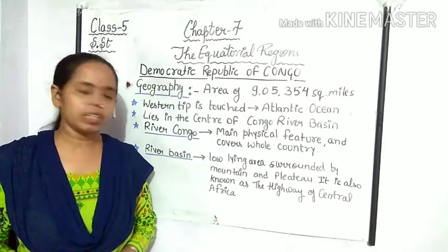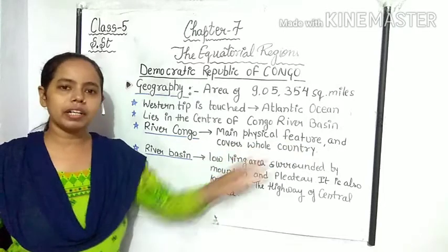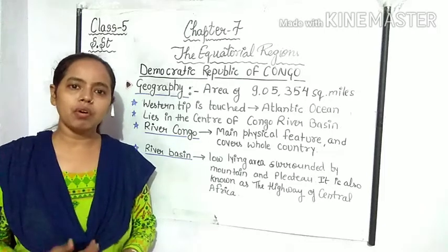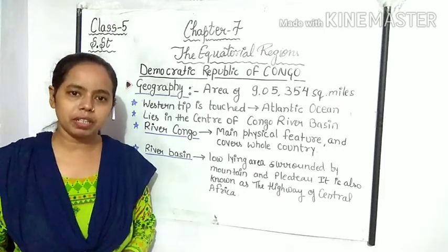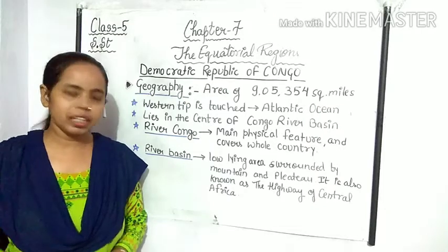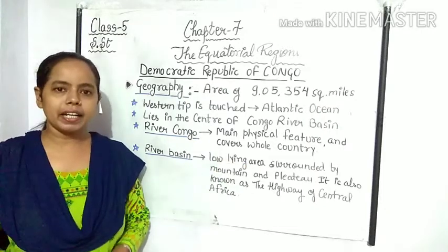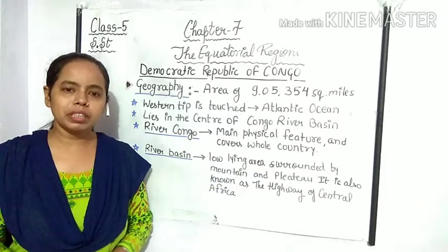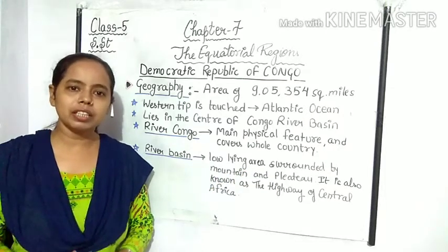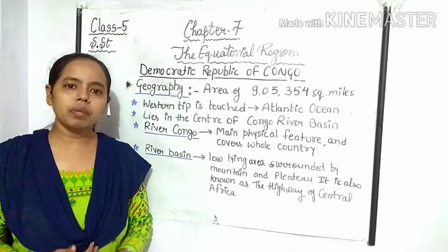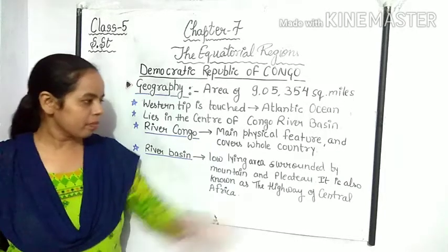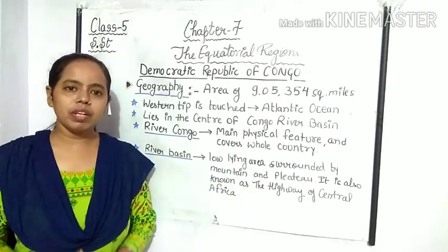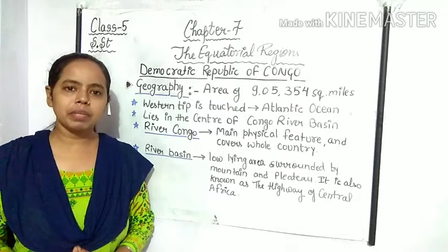River Congo is the main physical feature and covers the whole country. ये जो river है, वो almost पूरे country में से होकर गुजरती है। River Congo का बेसिन एक low-lying area है। It is surrounded by many mountains and plateaus. It is also known as the highway of Central Africa.